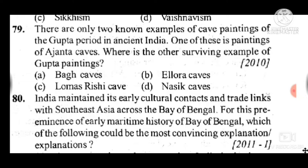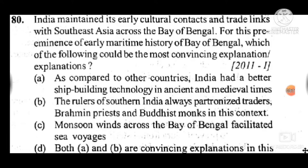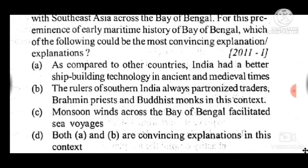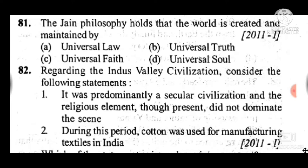Question 80: India maintained its early cultural contacts and trade links with Southeast Asia across the Bay of Bengal. The most convincing explanation for the preeminence of early maritime history of the Bay of Bengal — answer is D, both A and B are convincing explanations. Question 81: The Jain philosophy holds that the world is created and maintained by — answer is the Universal Soul.